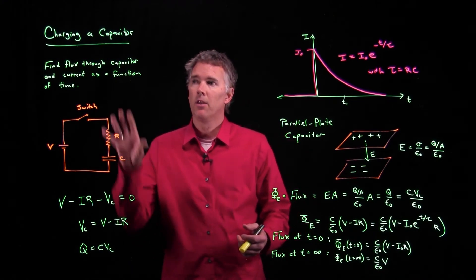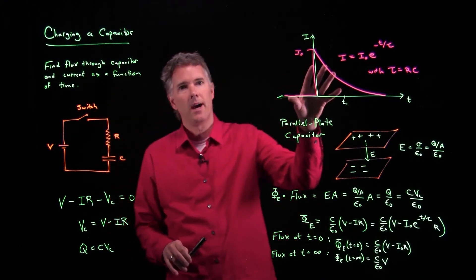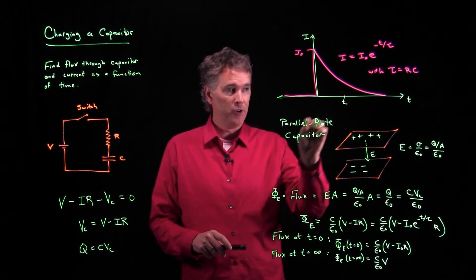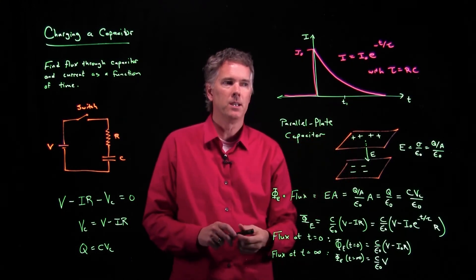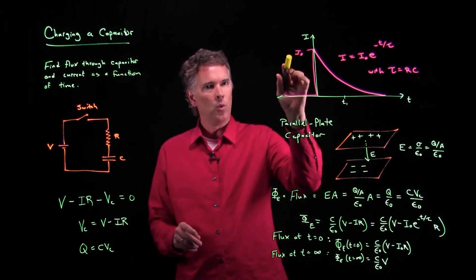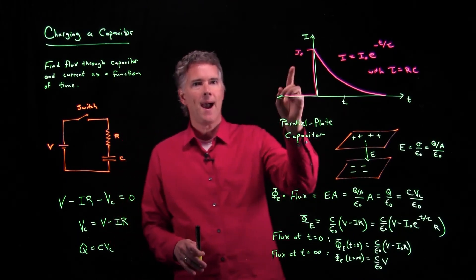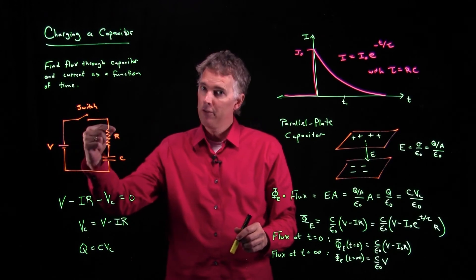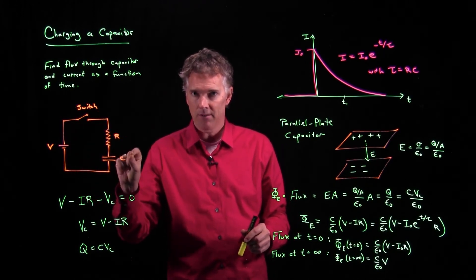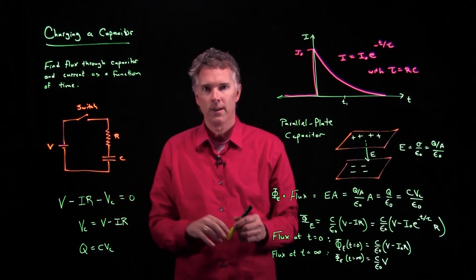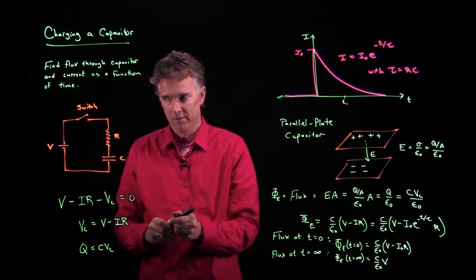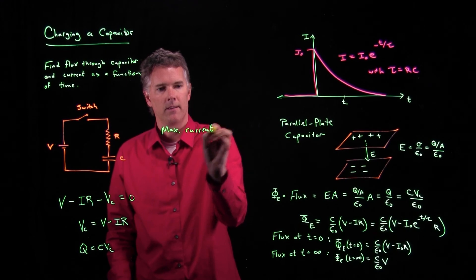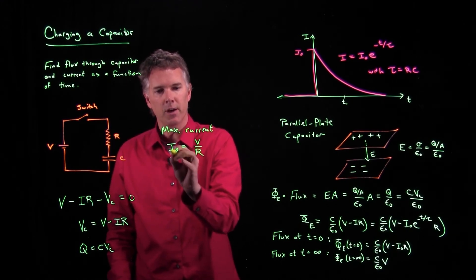Now, if you want to calculate the current as a function of time, we showed you how to do it right here. I is equal to I naught E to the minus T over tau. So if you, for instance, want the current at some time T1, you just have to plug T1 into that equation. But we need to know what I naught is. What is the maximum current? Well, the maximum current is when you first close the switch. And when you first close the switch, the capacitor hasn't had a chance to charge up yet. And so all the current is dropping across the resistor. And so the maximum current, I naught...